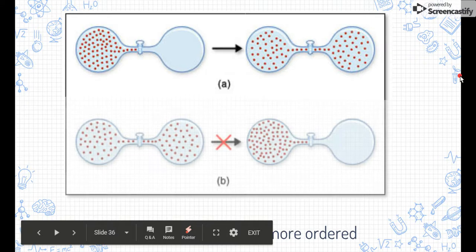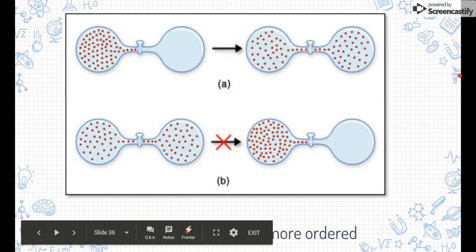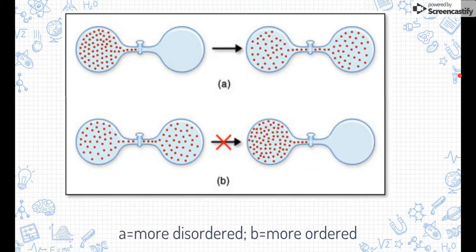The opposite is more ordered or less disordered, so the bottom one is negative delta S. So we have an increase in entropy for A and a decrease in entropy for B. Now remember,